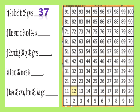For the sum of 9 and 44, look at 44. Jump one row above to reach 54, then step one towards the left to get 53. For reducing 98 by 34 — 'reducing' means to subtract — look at 98, jump three rows down to reach 68, then four steps towards the left gives us 64.